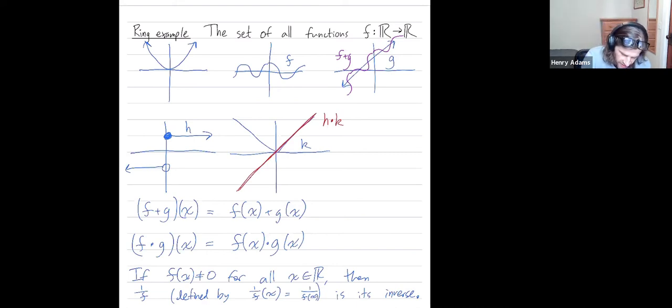Let me draw a picture of this. Let's say I look at this function x² + 1. Its multiplicative inverse is going to be 1/(x² + 1), which is going to look something like this, asymptoting into zero.